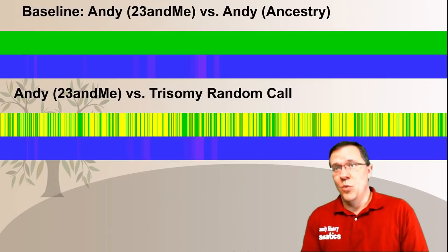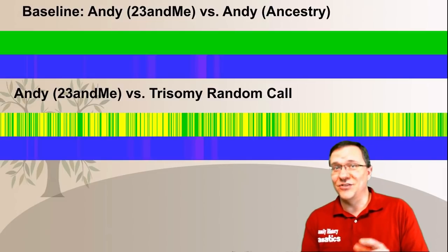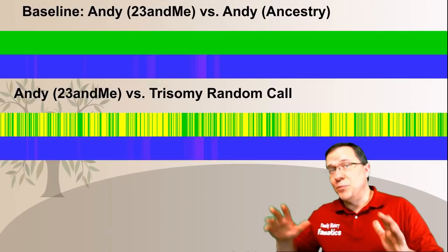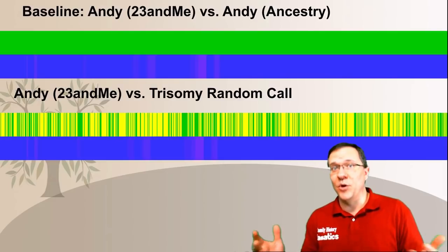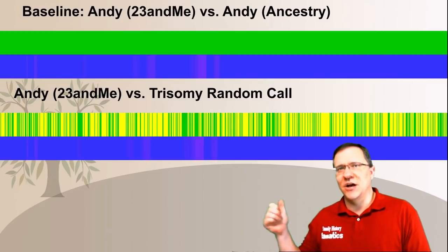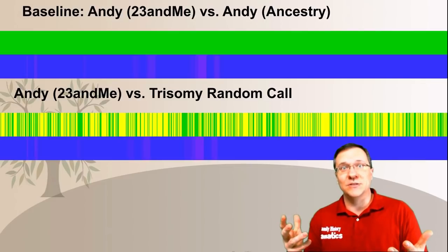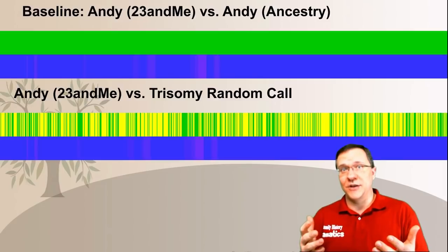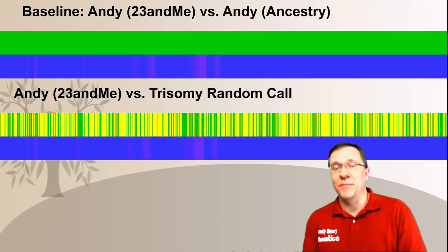Now the fun begins. When I look at 23andMe versus my trisomy random call kit, I can start to see some big differences. The blue bar is all the way across the chromosome because I'm always pulling at least one of my father's SNPs, so I'm going to be at least a half match across this entire chromosome. But instead of a solid green bar on top, it's now interspersed with a lot of yellow, indicating cases where I don't match both of my parents because sometimes I'm pulling both of my father's SNPs rather than my father's SNP and one of my mother's SNPs.